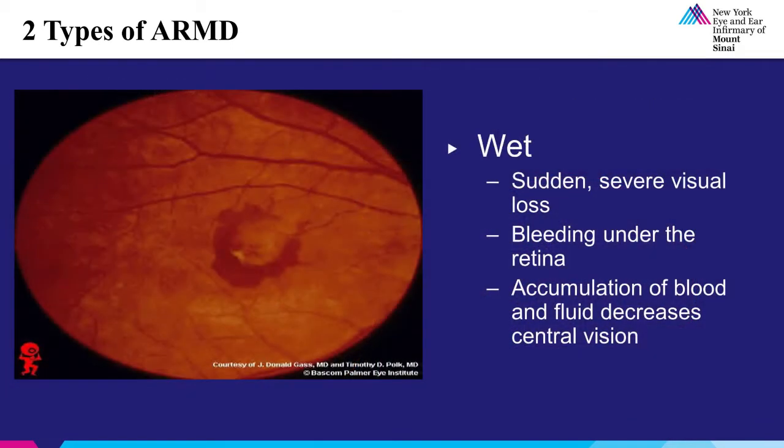This slide depicts wet macular degeneration. In this condition, vision loss is more sudden and severe, caused by acute bleeding under the retina. As you can see here, there is fresh blood in the macula. Along with blood, there is leakage of fluid, which leads to decreased vision. Usually, patients with many drusen are more at risk for wet macular degeneration.